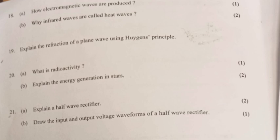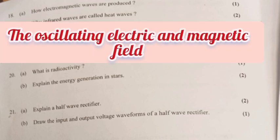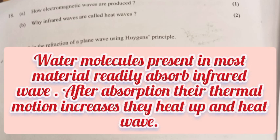Question 18A: How are electromagnetic waves produced? Answer: The oscillating electric and magnetic field. Part B: Why are infrared waves called heat waves? Answer: Water molecules present in most materials readily absorb infrared waves. After absorption, their thermal motion increases, they heat up, hence called heat waves.